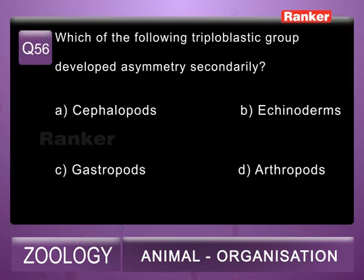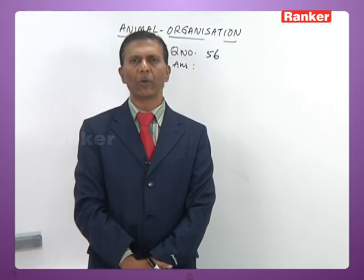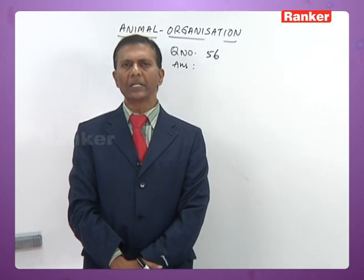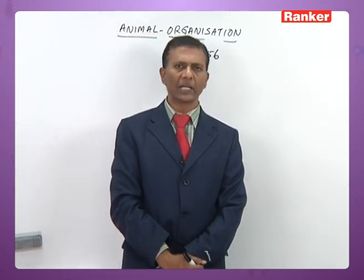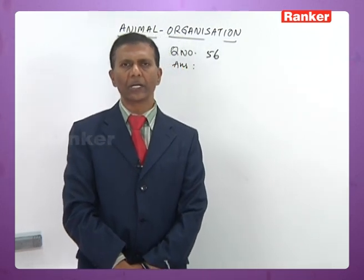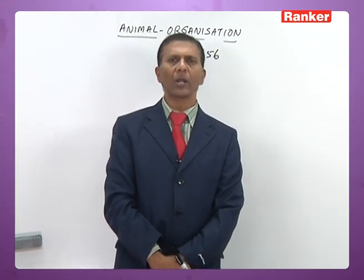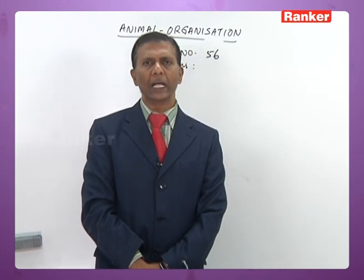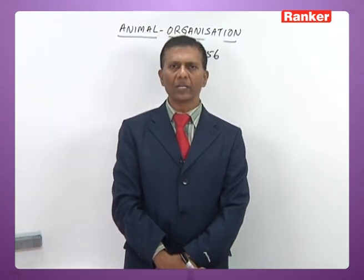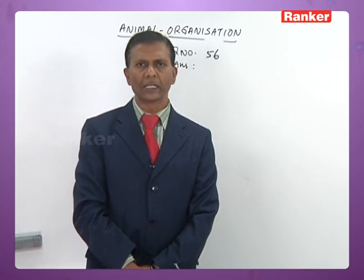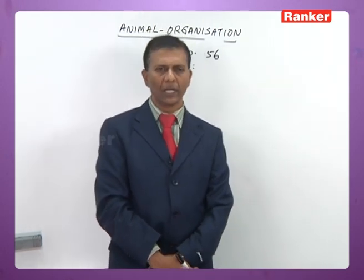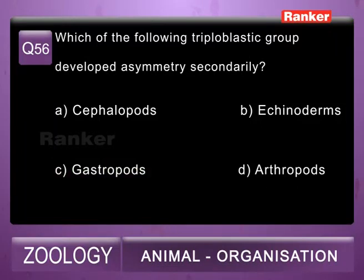Question 56: which of the following triploblastic groups developed asymmetry secondarily? A) cephalopods, B) echinoderms, C) gastropods, D) arthropods. Gastropods belong to phylum Mollusca. They are basically bilaterally symmetrical, but symmetry is lost due to torsion — the rotation of the visceral mass at 180 degrees in an anti-clockwise direction. Because of torsion, adults lose their bilateral symmetry and become asymmetrical. The 56th question correct answer is C, gastropoda.